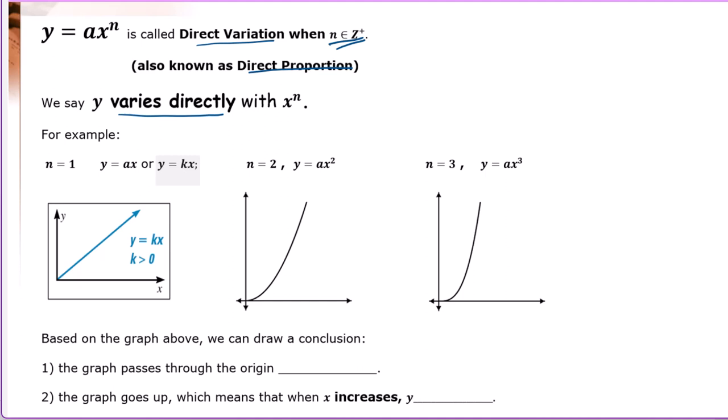When n equals 1, this is a linear function: y equals ax. When n equals 2, y equals a times x squared. When n equals 3, y equals a times x to the third power.